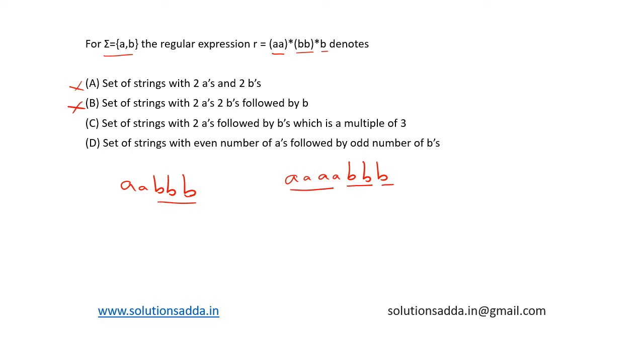Set of strings with two a's followed by b's which is a multiple of three. This is also not correct. We can write an example as a, a, b. This is a set of string with two a's followed by b which is only one. It is not a multiple of three. So, this is also not correct.